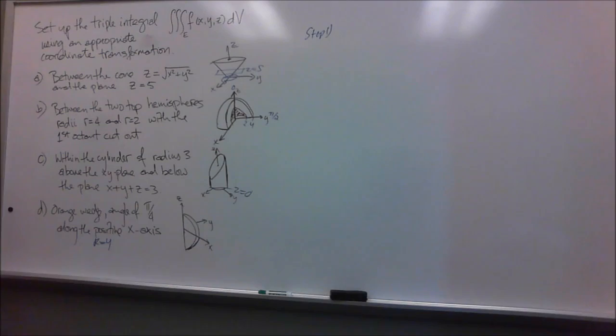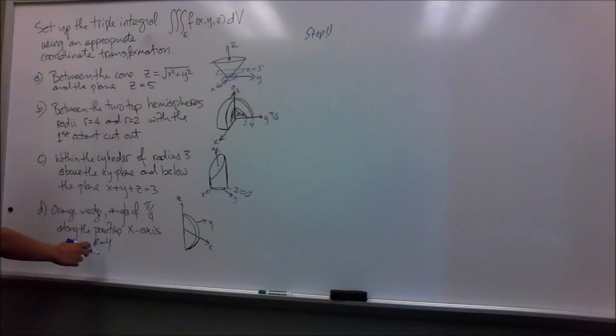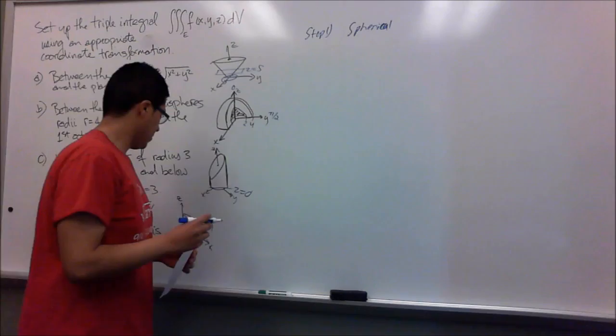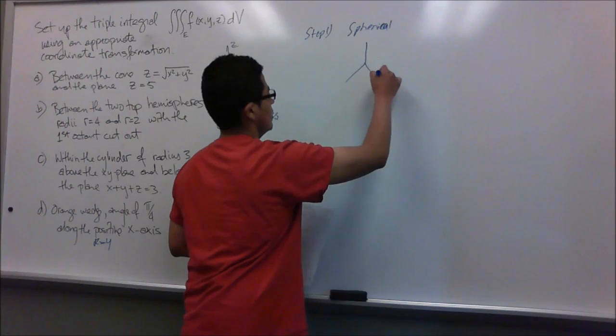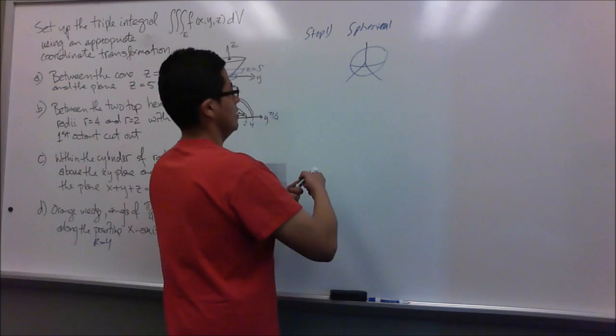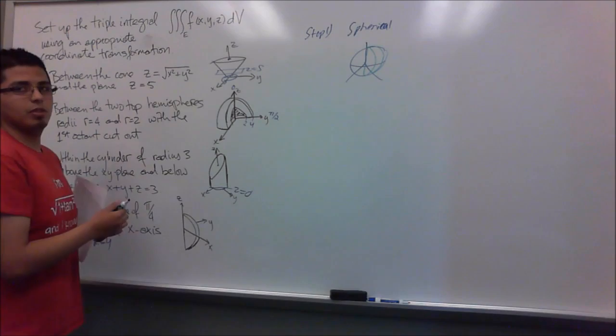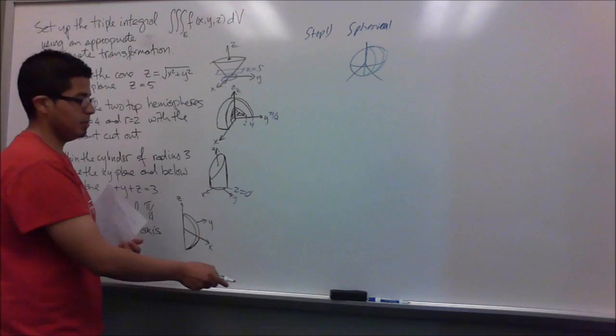For this problem I will be setting up the triple integral for an orange wedge at an angle of pi over 4, along the positive z-axis, of radius 4. The method I will use is spherical coordinates, because you draw a sphere and cut part of it into a wedge — these wedges are just slices of the sphere, so spherical coordinates are appropriate.